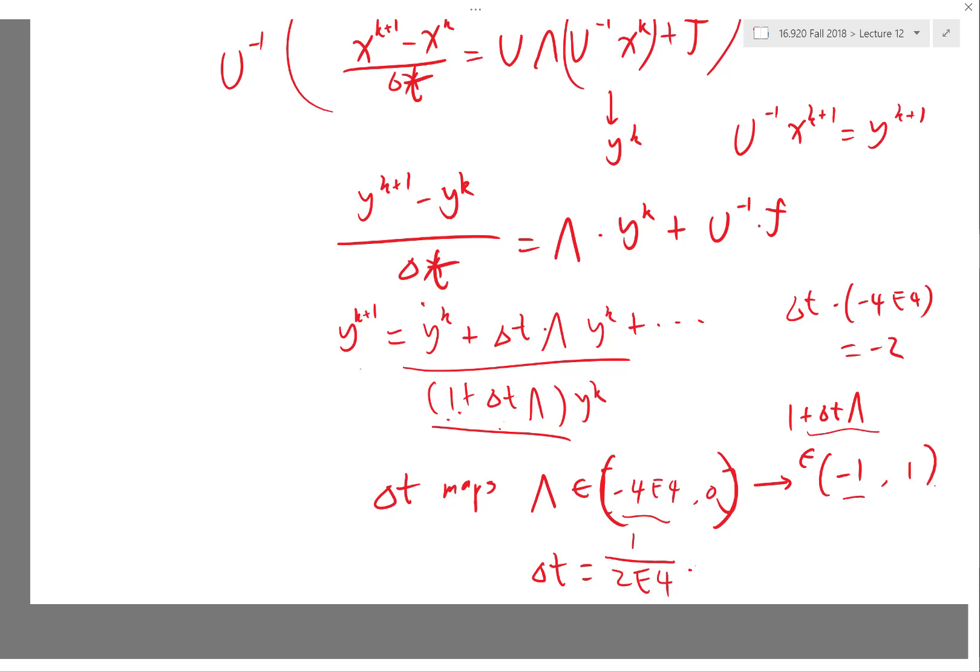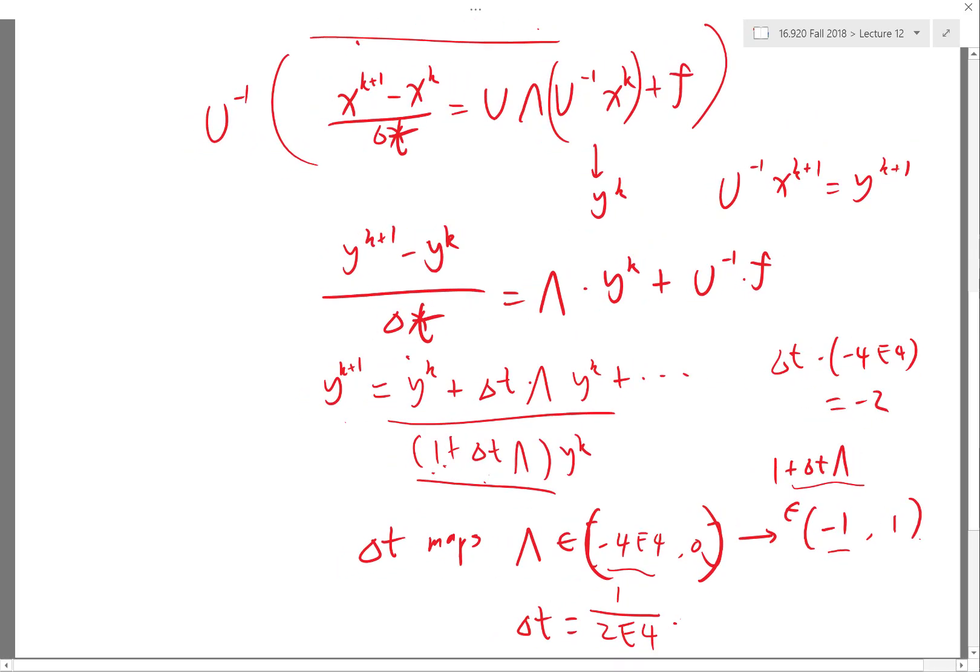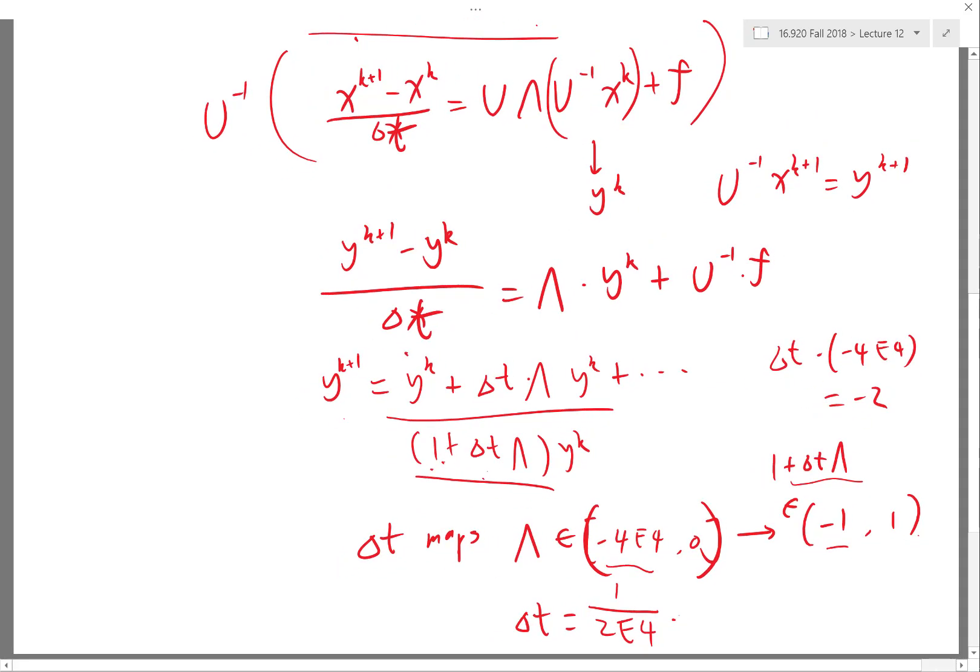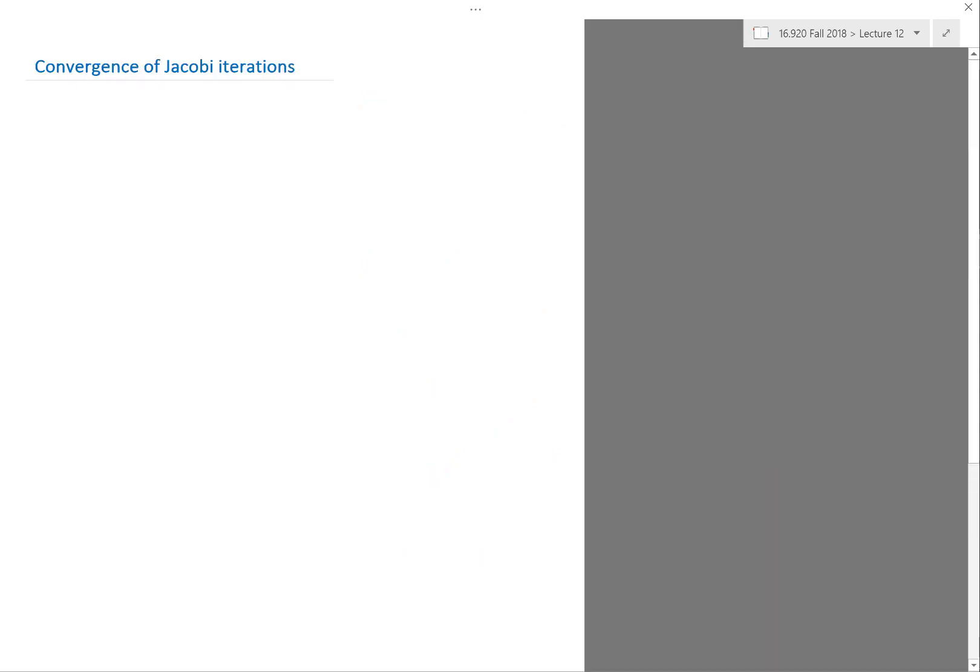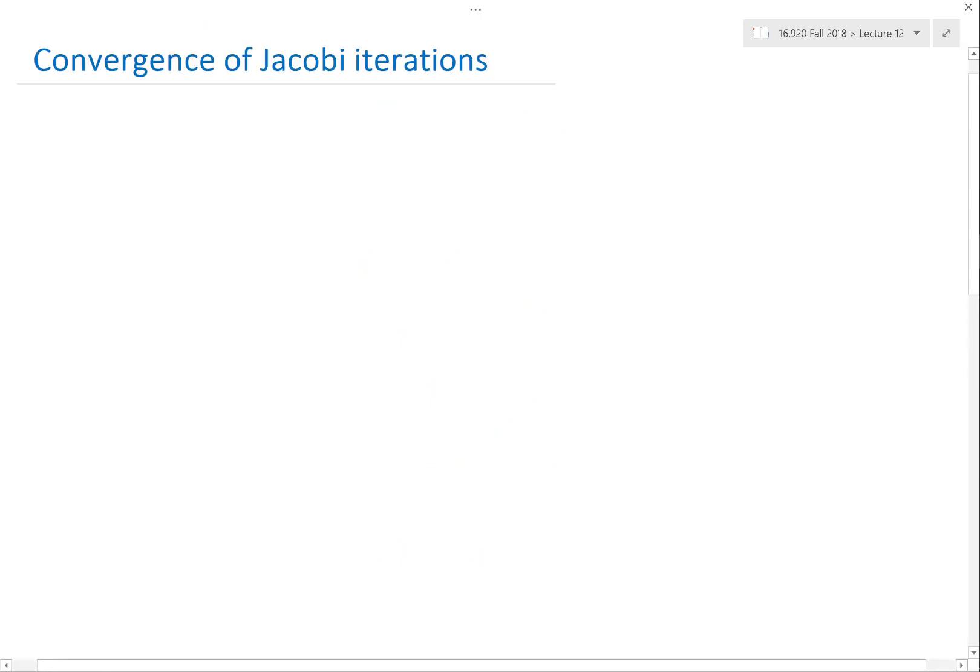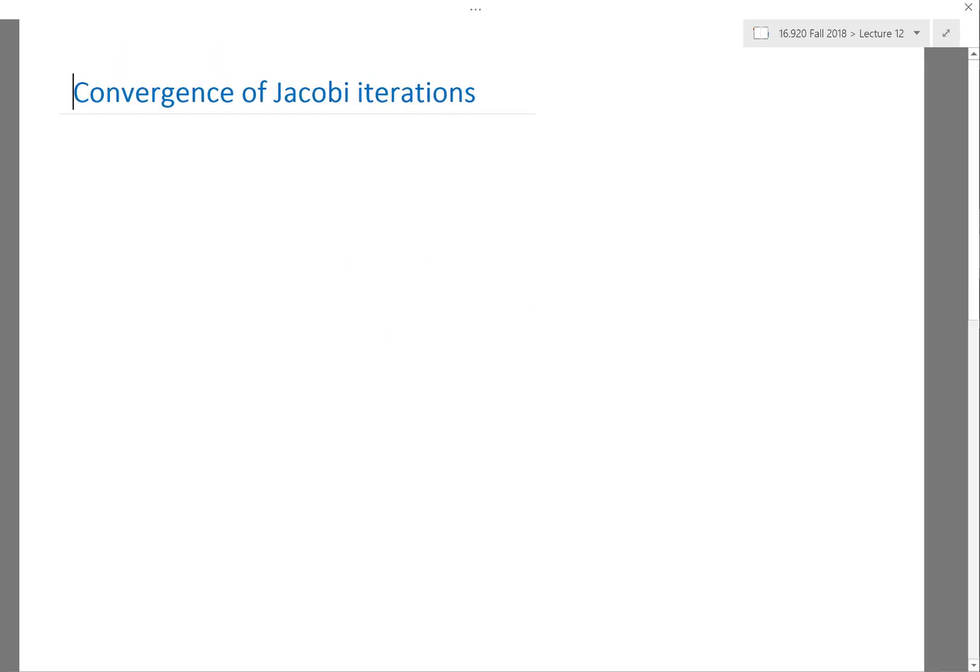So the idea of Jacobi is essentially a grid point dependent time step, and the time step actually is going to be exactly the same size as the diagonal of the entry.